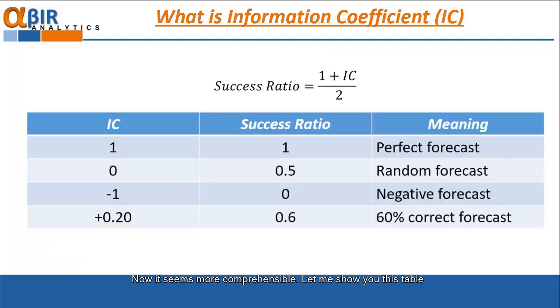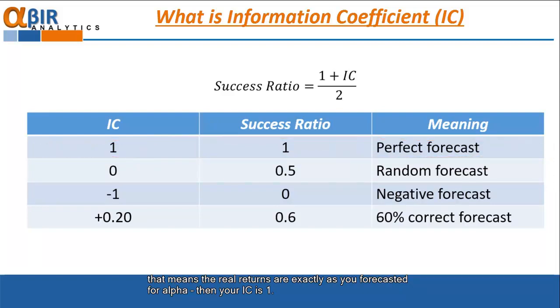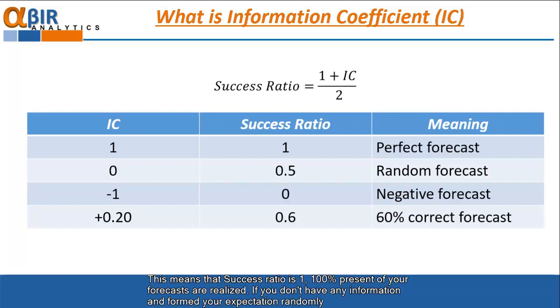Let me show this table. Here we compare the values of IC and success ratio. For example, if your forecasting skills are perfect, that means the real return are exactly as you forecasted for alpha, then your IC is 1. This means that success ratio is 1. 100% of your forecasts are realized.